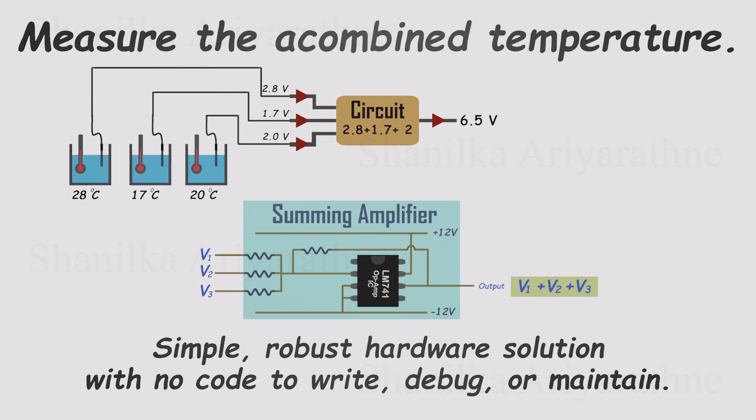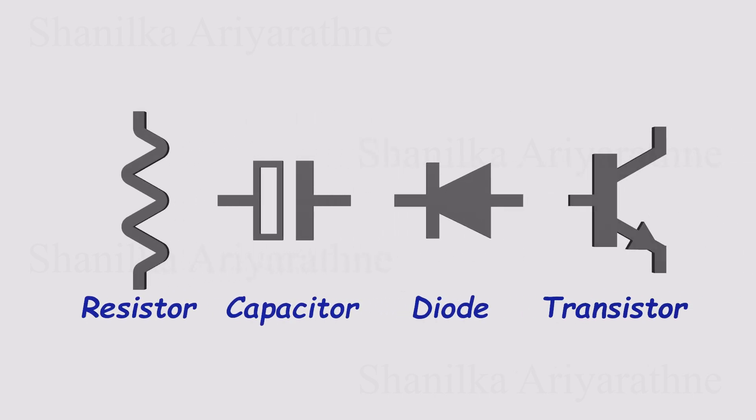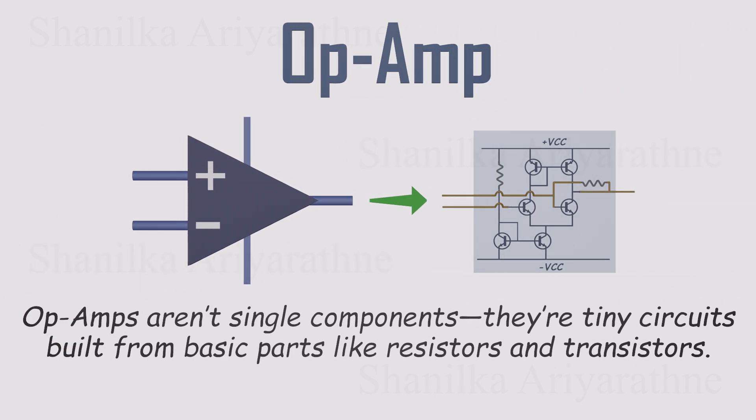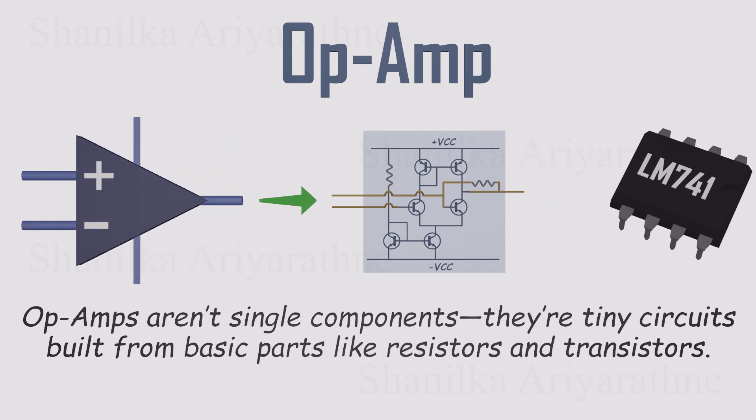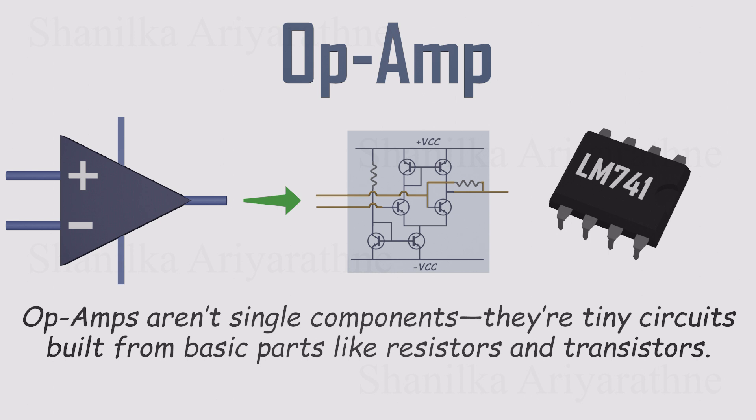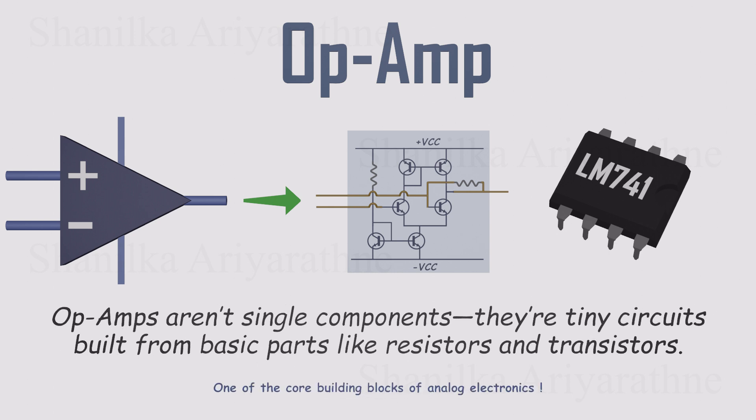But for now, let's do a quick refresher. Unlike a resistor, a capacitor, or even a transistor, an op amp isn't just a single component. It's actually an entire circuit made of those building blocks, all tucked neatly inside one tiny chip. That's why they're sold as ICs, integrated circuits.